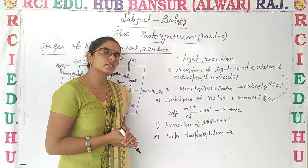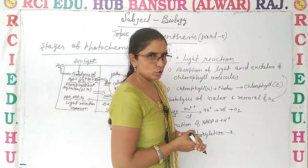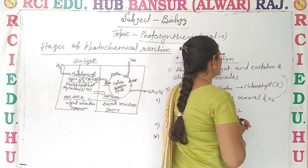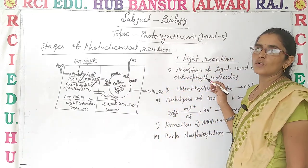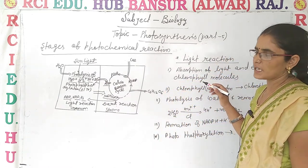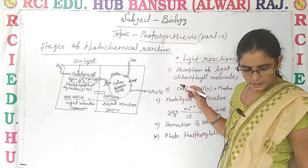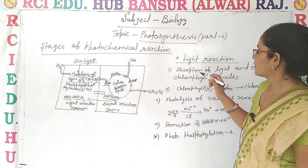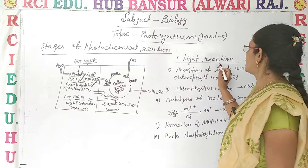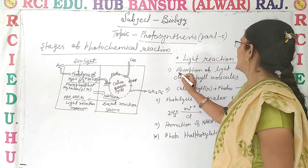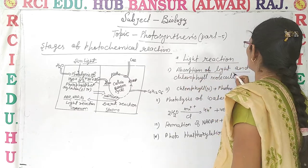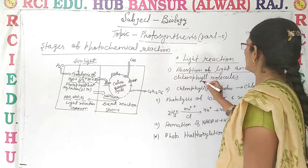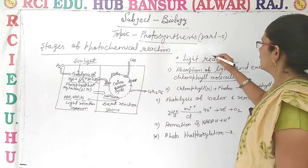So now let's discuss in detail about the light reaction. The light reaction consists of only four steps. Step one: absorption of light and excitement of chlorophyll molecules.